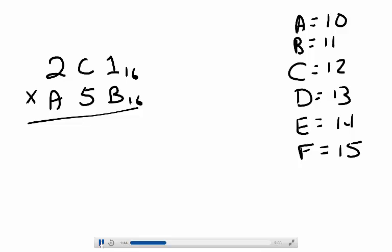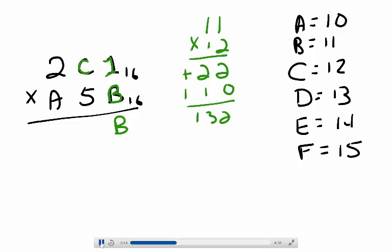We'll start by multiplying 1 times B, which gives us B. Then we'll multiply C times B. Multiplying B times C is the same as multiplying 11 times 12, so we work that out and we get 132.